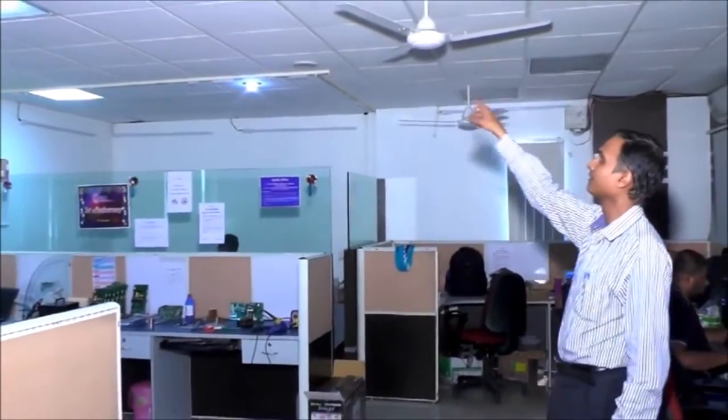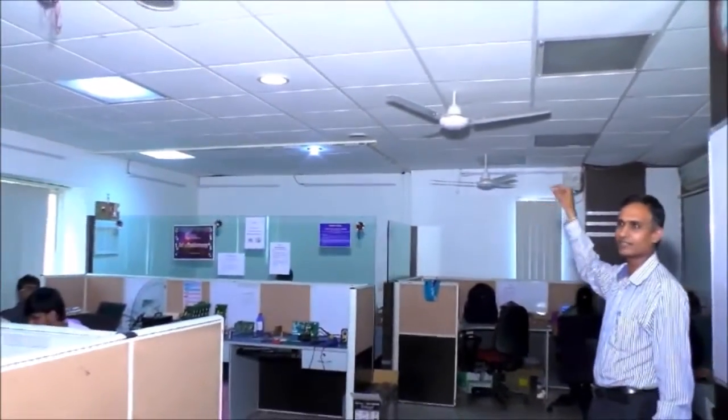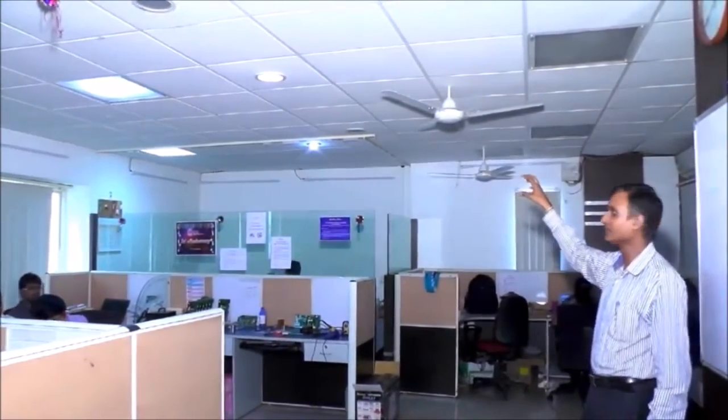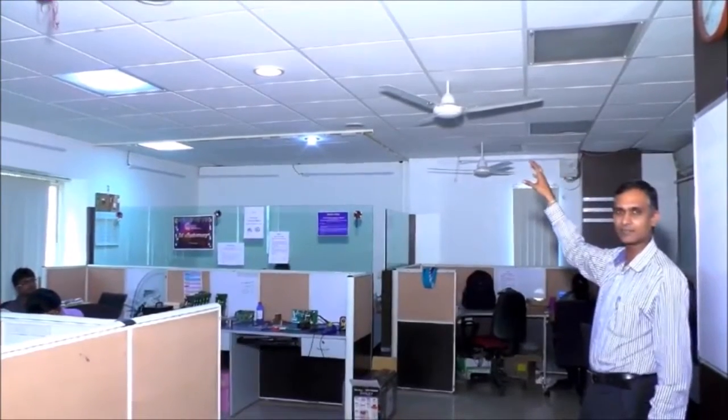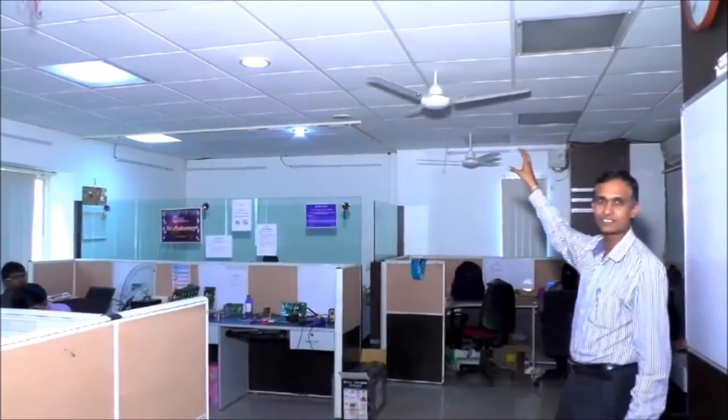This fan, the LED down light and the LED tube lights, they fall under the energy efficient lighting systems in the conventional system. That is, they work on the AC supply but they are the LED bulbs and the energy efficient star rated